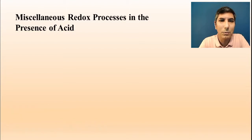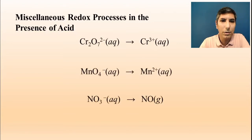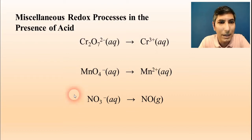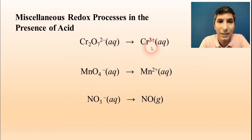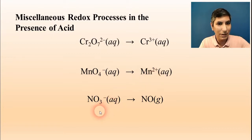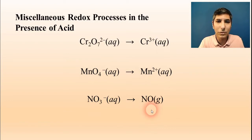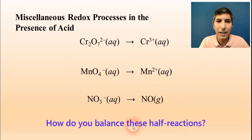There are some redox reactions that take place in the presence of acid, and as you look at these three, you'll notice that some of them look a little bit unusual. For example, the dichromate ion ends up being turned into chromium 3+ ions, and the permanganate ion ends up being turned into manganese 2+, and the nitrate ion ends up being turned into nitrogen monoxide gas. The question is, how do you balance these half reactions?